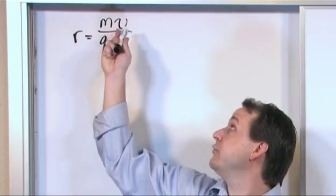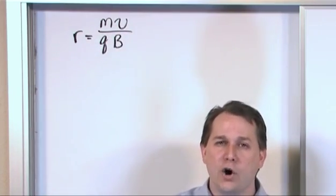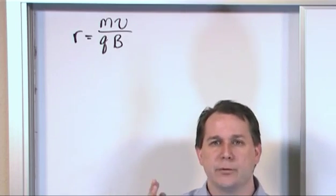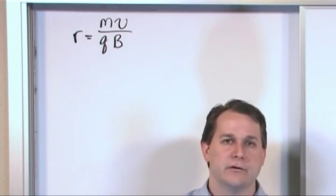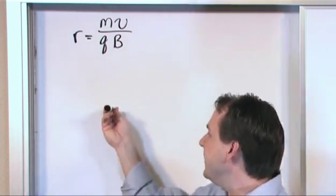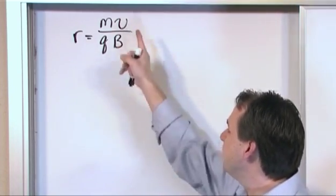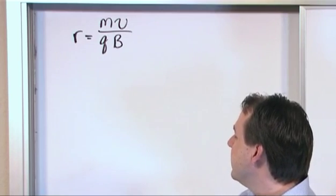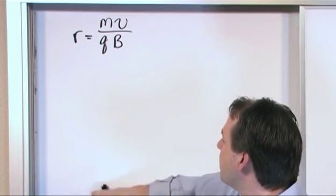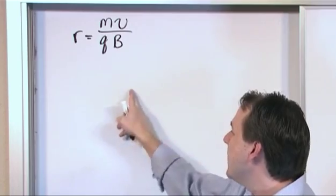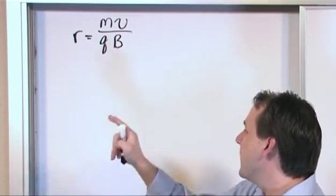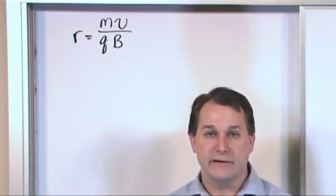The velocity that they're talking about is really always the velocity component of your particle that's perpendicular to your field. So if you had a field coming out of the board, for instance, then the velocity you'd put in here would be the velocity of the beam that's coming in perpendicular to this field. If I shot a beam up, then it would orbit around the magnetic field lines coming out of the board.